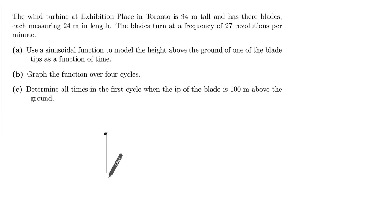So we have a wind turbine, and its height to the center in this question is 94. Then there's going to be blades. This blade they're saying is 24 meters in length. So if this is 94, it's going to go up to the maximum of 24, so it's going to be 118. The total length is 118.